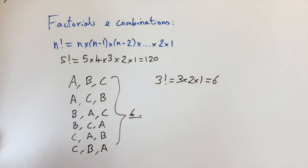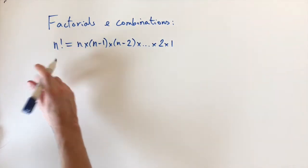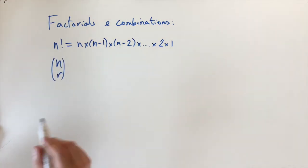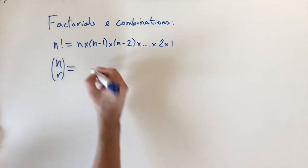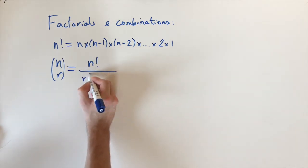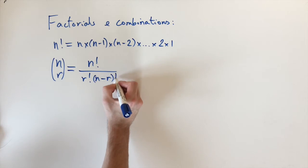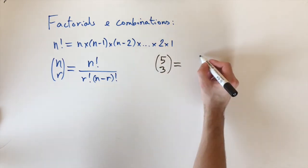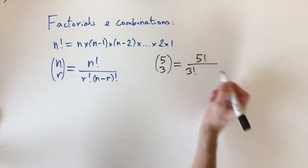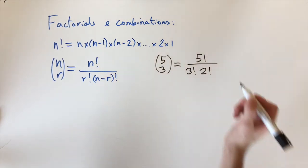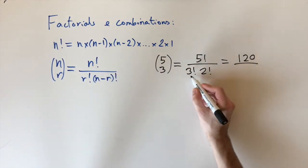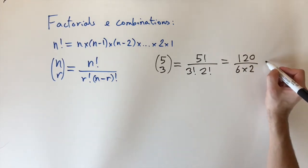Now we're going to look at combinations. We introduce the notation n choose r, written as n over r in brackets. This is defined as n factorial divided by r factorial times n minus r factorial. As an example, 5 choose 3 equals 5 factorial divided by 3 factorial times 2 factorial, which is 120 divided by 6 times 2, giving 10.